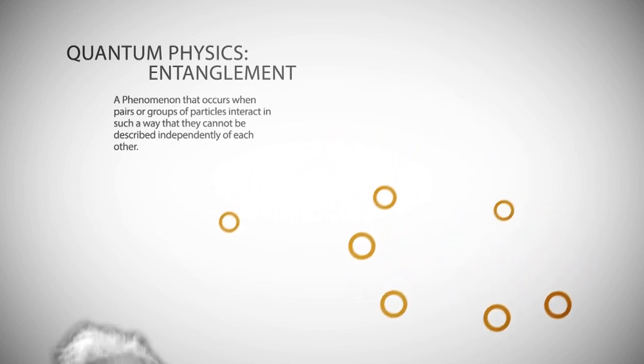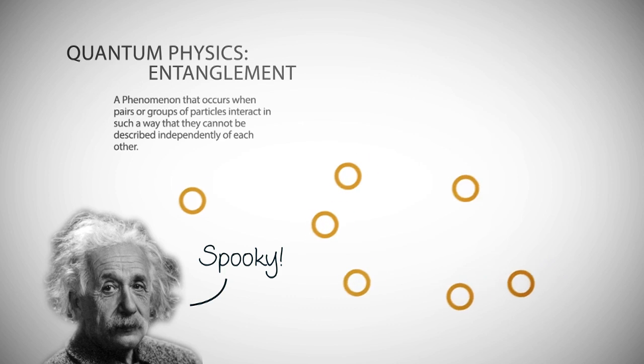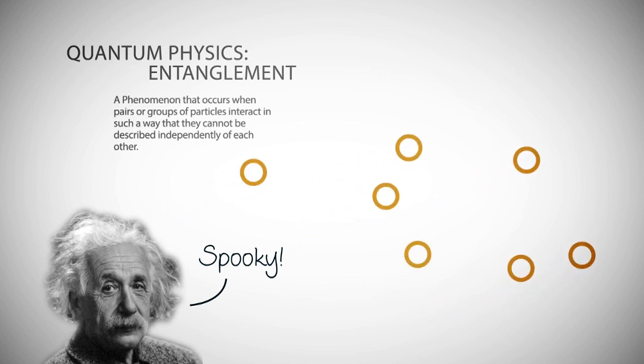Einstein called entanglement spooky action at a distance, which was his way of saying, I don't know why this works, and I'm not even convinced that it should work, but it does appear to work.